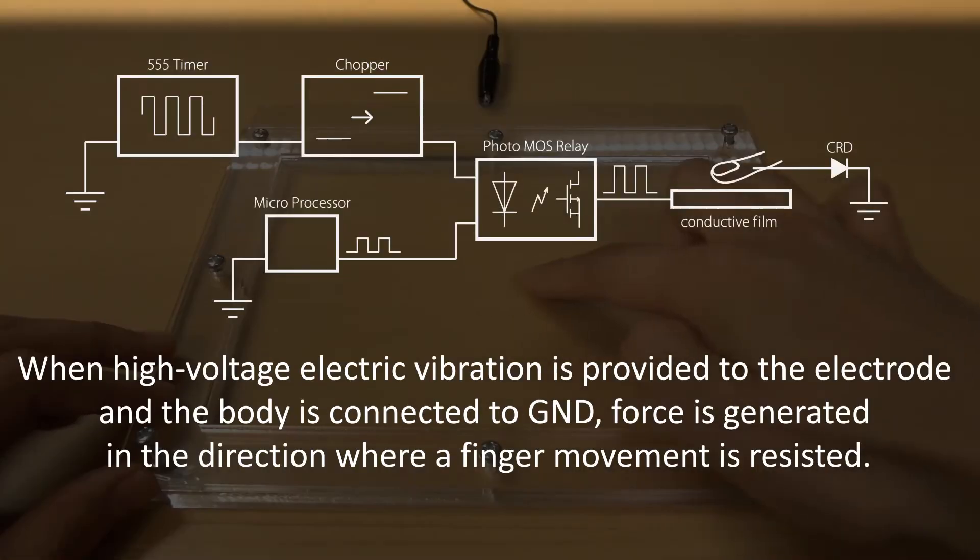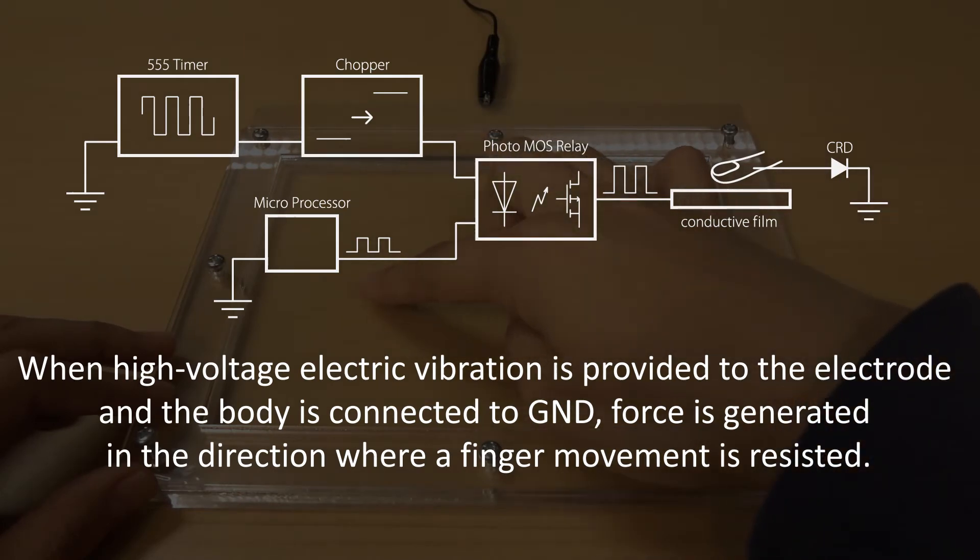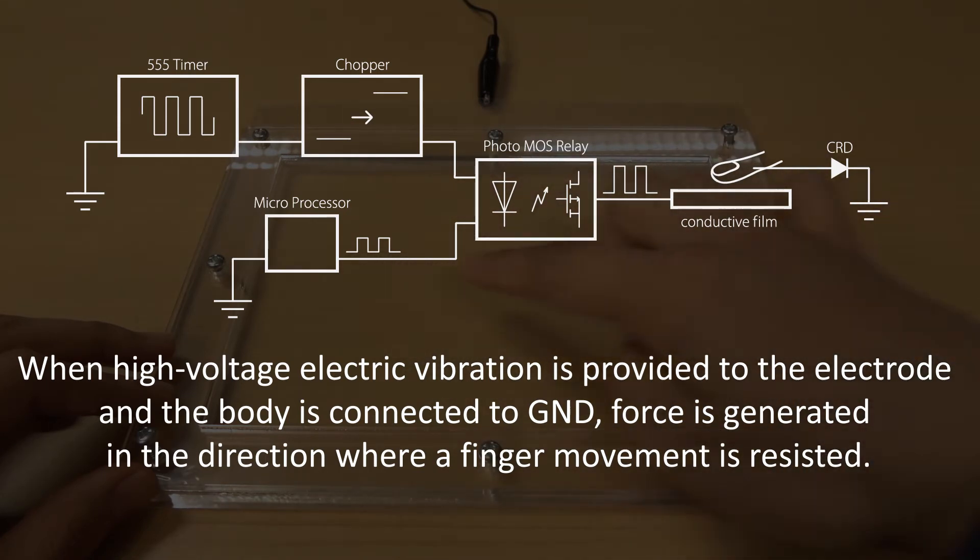The conductive electrode layer provides high-voltage electric vibration to the electrode while the body is connected to the ground. This generates force in the direction where finger movement is resisted.